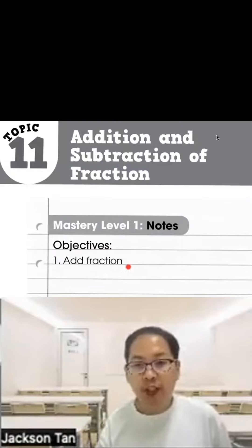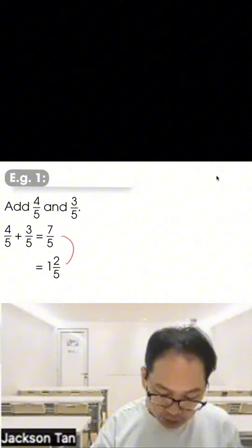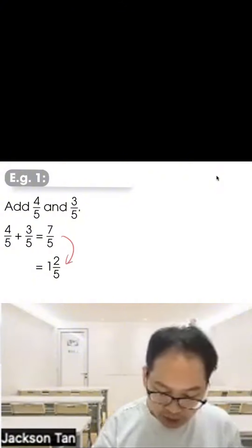Before addition and subtraction of fractions, mostly level one, we talk about four fifths and three fifths. When the denominator is the same, the number below, once it's the same, add the numerators: four plus three equals seven. So this is an improper fraction, 7/5, so we need to change to mixed form. Basically this is made up of five fifths plus two fifths.